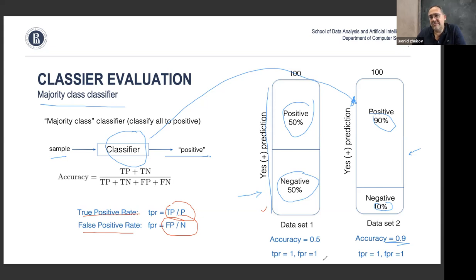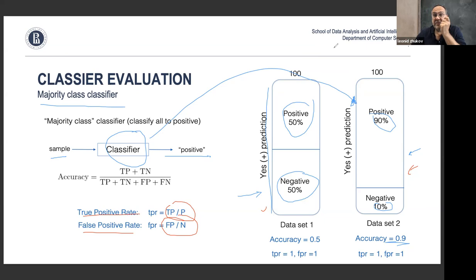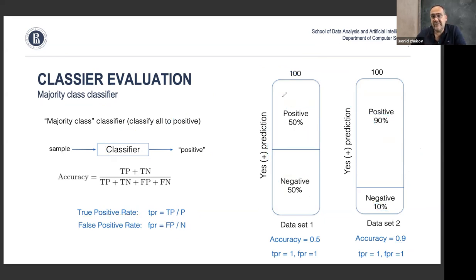On the 90/10 dataset, the same brute-force classifier gives TPR = 90/90 = 1 and FPR = 10/10 = 1. So if we measure by relative rates TPR and FPR rather than accuracy, we get the same result on both datasets — TPR = 1 and FPR = 1. This is now an absolute characteristic of the algorithm itself, not of the algorithm on a particular dataset.